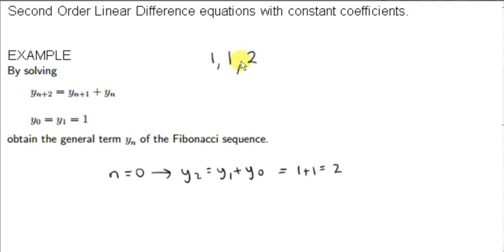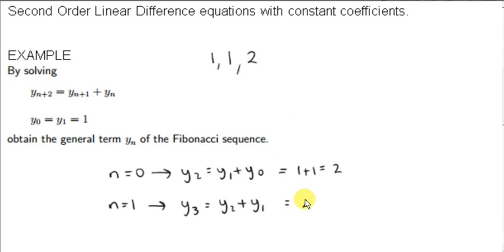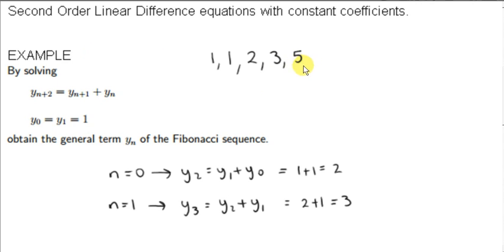The third term is 2. If we set n equal to 1 in our difference equation, we get y3 equals y2 plus y1. Well, that's 2 plus 1, which is 3. We can see the pattern — to get each term of the sequence, we just sum the two previous terms. So the next term is going to be 5, the next 5 plus 3 which is 8, then 8 plus 5 which is 13, and so on. This is the famous Fibonacci sequence.